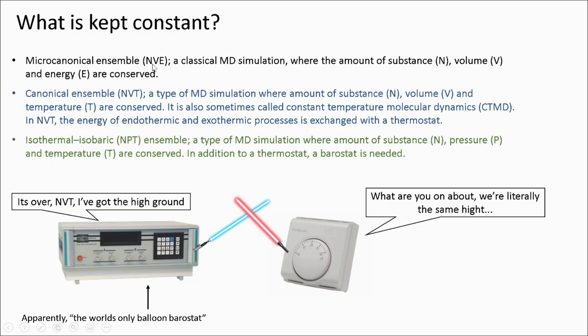Another method is the canonical ensemble or NVT for short, where the amount of substance, volume and temperature are conserved, which is why it is also referred to as constant temperature molecular dynamics. We can refer to the implementation of this as a thermostat because the temperature is kept constant.